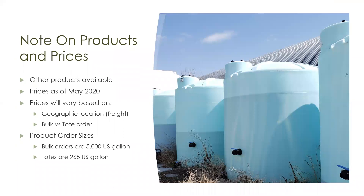Just a few quick notes on the products and prices. We've covered the main products used in Western Canada, but there are some other products available — check out the Kugler website or talk to your local Top Crop dealer or rep. The prices provided are accurate as of May 2020, and there will be some variances based on location due to different freight amounts and on order size, buying totes versus bulk orders. Products can be ordered in bulk with a 5,000 US gallon minimum, and the product comes out of Rapid City, South Dakota. Or they can be ordered in totes that are 265 US gallons, FOB one of our stocking locations. There is a tote fee of $265 per tote, but you get a rebate of $100 when it is returned in good condition.